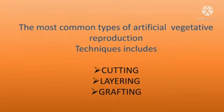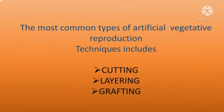The most common types of artificial vegetative reproduction techniques include cutting, layering, and grafting.